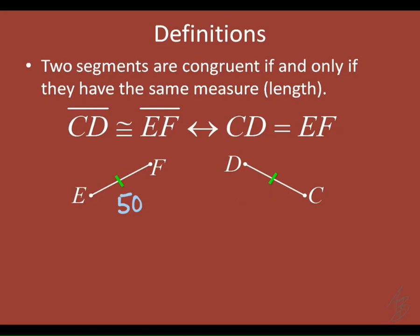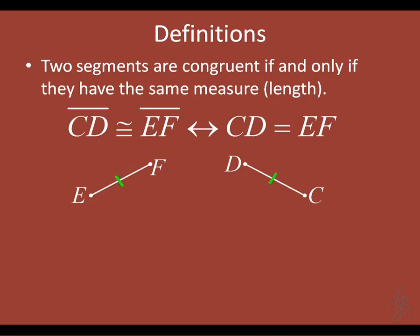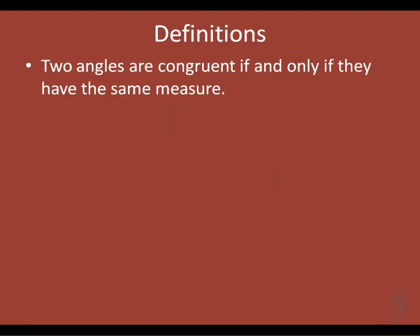If I know the lengths are the same — say both are 50 centimeters — are those two segments congruent? Yes. So that's the biconditional working the other way: we know they have the same length, so they're congruent, and we can put tick marks on them. The biconditional works both ways, which is what makes it so powerful — twice as much as a regular conditional.